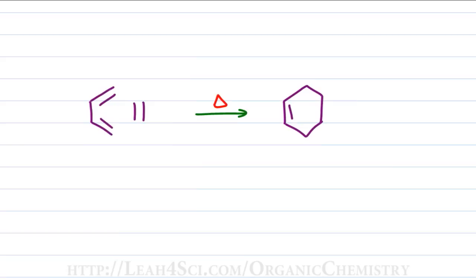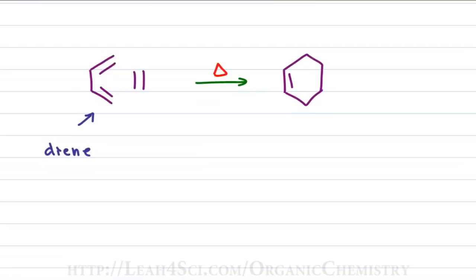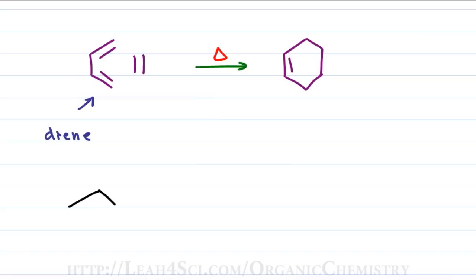The first thing we have is the diene. More specifically, this has to be a conjugated diene where the pi bonds are directly near each other. There are two forms that you'll see for the diene.